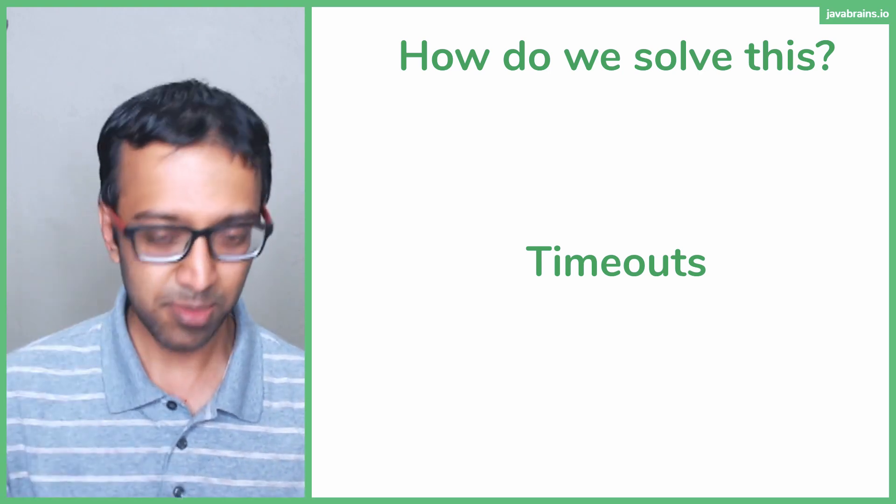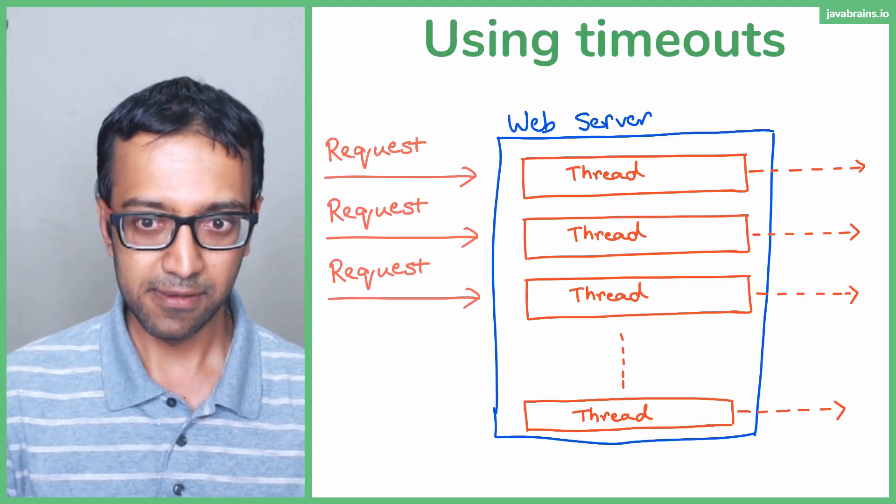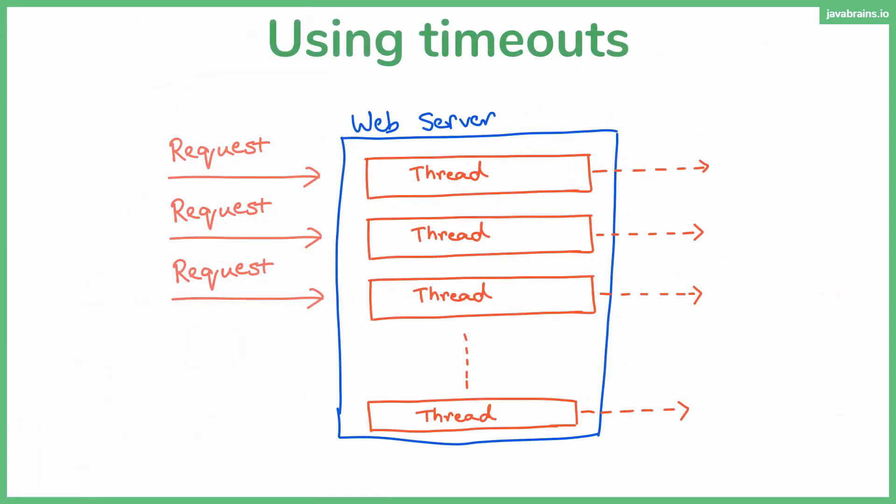So something is sitting in the thread pool, and then something is taking a long time. So what do you do? You say, okay, I've given you as much time as you need, and then you still haven't returned it. So you go away. You return back an error. And once you return an error, that thing goes away from a concurrent thread.